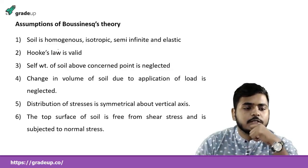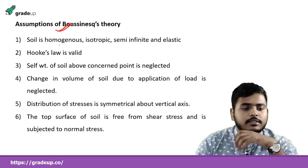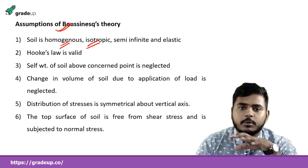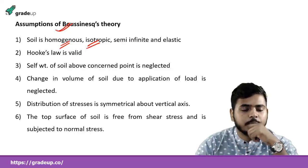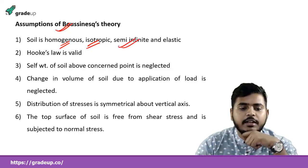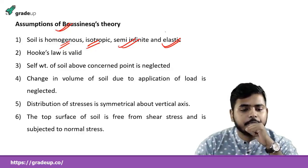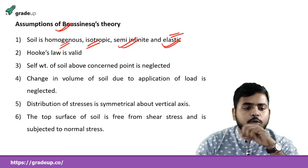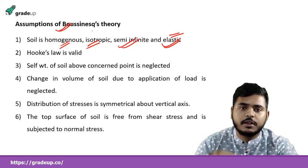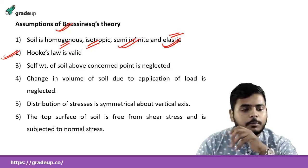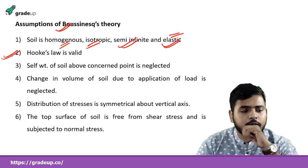Now let's look at the assumptions Boussinesq made in this theory. He considered the soil as homogeneous, isotropic — meaning properties are the same in all directions — semi-infinite (depth is finite, area is infinite), and elastic. Both Boussinesq and Westergaard theories are based on elastic theory. Hooke's law is valid here, meaning stress is directly proportional to strain.